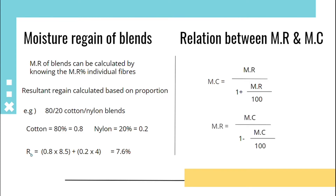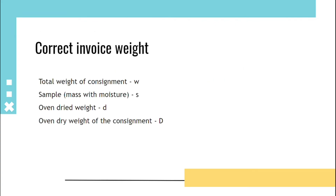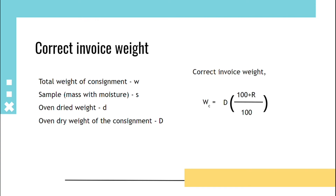Correct invoice weight: let total weight of consignment be w, sample along with moisture be s, oven dry weight be d, and oven dry weight of the consignment be D. Correct invoice weight = (100 + R) / 100 × oven dry weight of the consignment, where R is the moisture regain percentage.